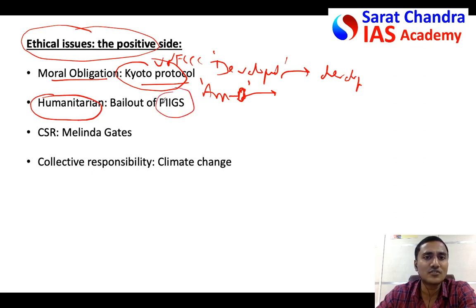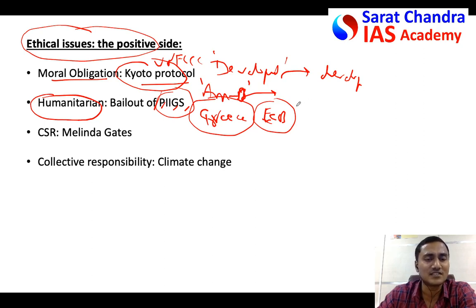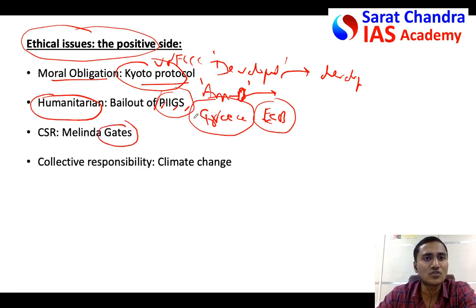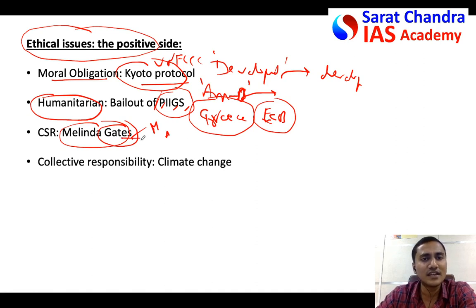Another positive is humanitarian grounds. For example, when Greece fell into economic crisis, the European Central Bank and other large organizations bailed out Greece to help its population recover. Similarly, Bill Gates earned profits globally by selling Microsoft products, and so felt a responsibility to help poor countries. The Bill & Melinda Gates Foundation has funded heavily for fighting malnutrition, AIDS, and poverty across the world, including India. This can also be called corporate social responsibility.